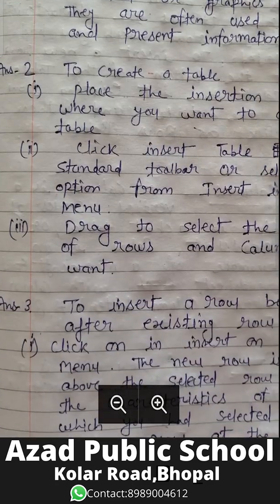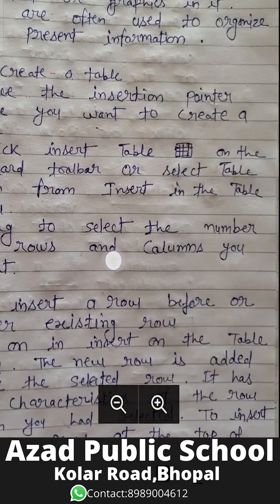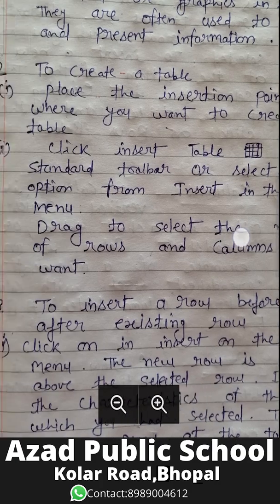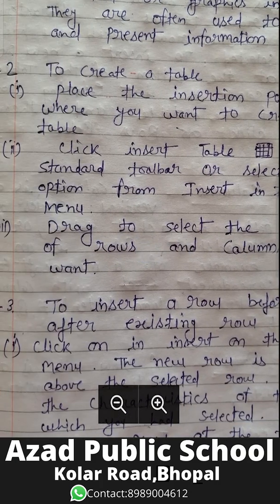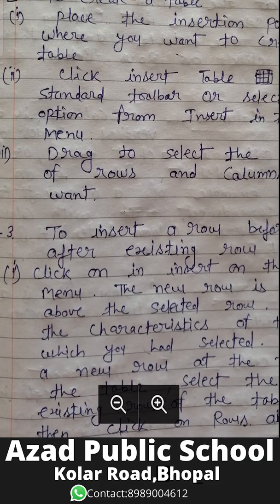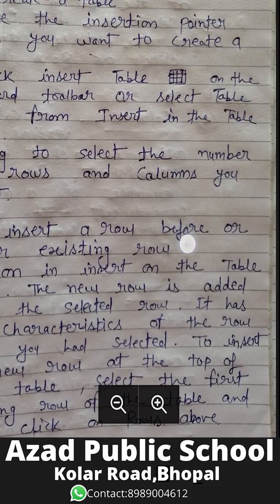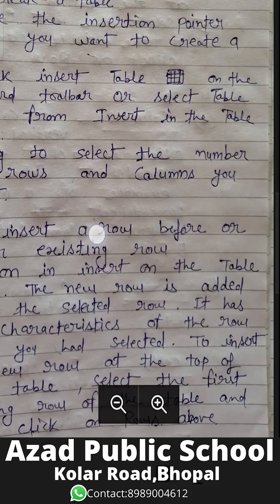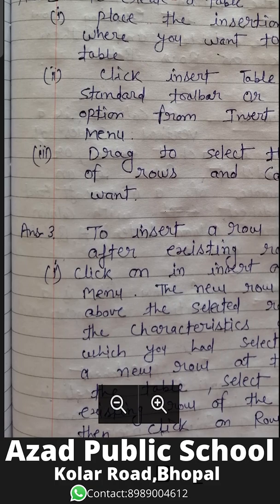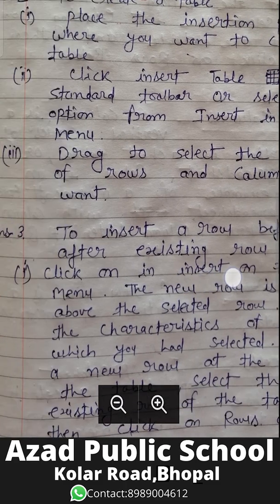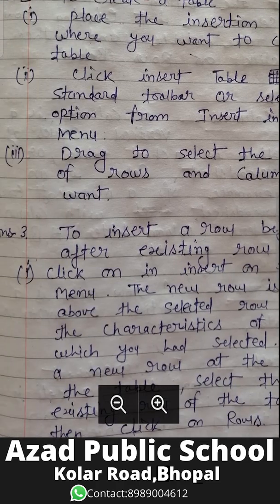How do you create a table? There are three methods. First, place the insertion pointer where you want to create a table. Second, click Insert Table on the standard toolbar, or select the Table option from Insert in the menu. Then go to the standard toolbar, click Insert Table, and select the table. Third, drag to select the number of rows and columns you want.